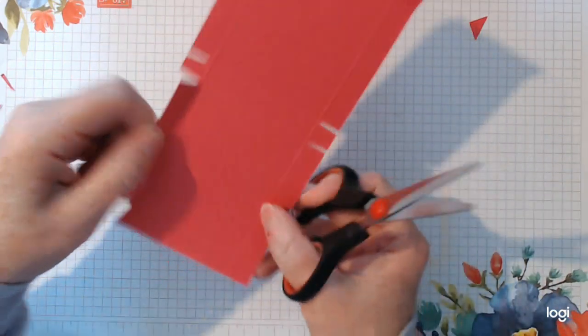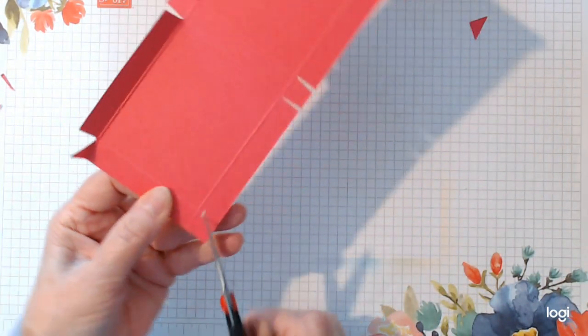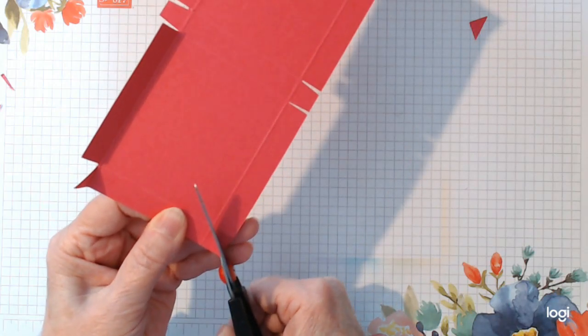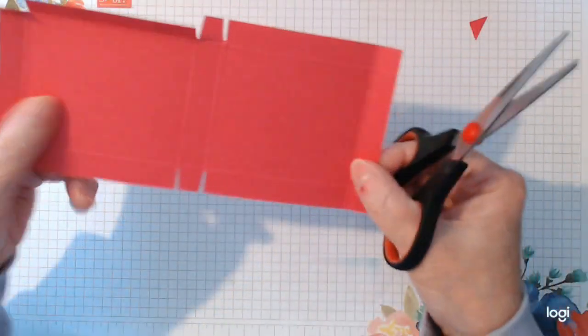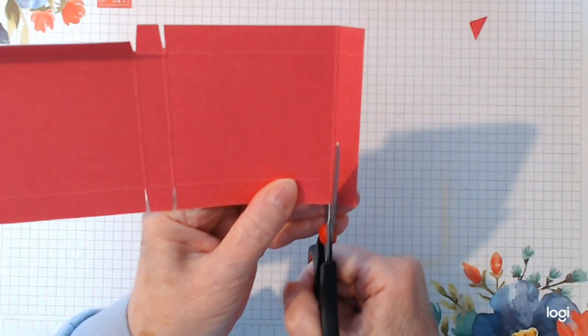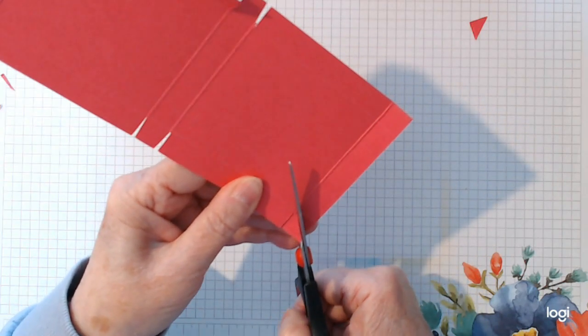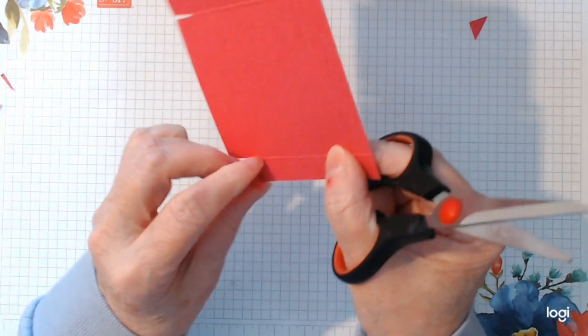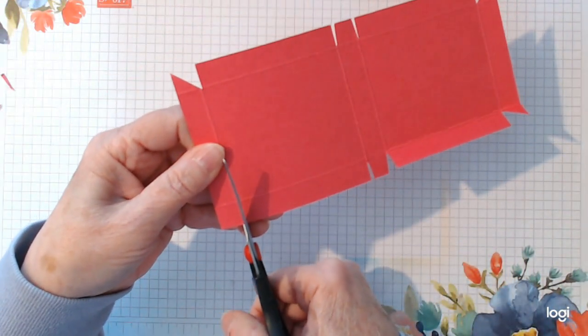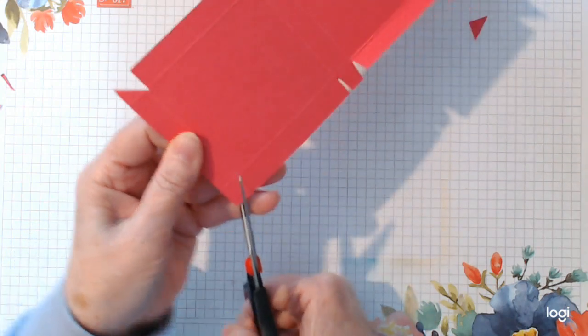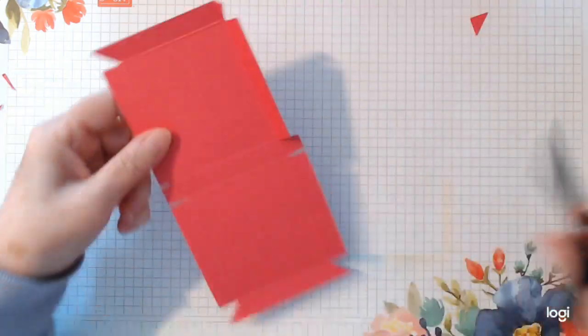So do the same on the other side. Cut in to the score line and cut up from there. The same on this side. And this one.